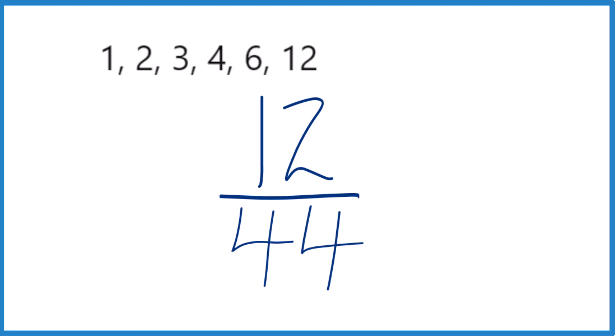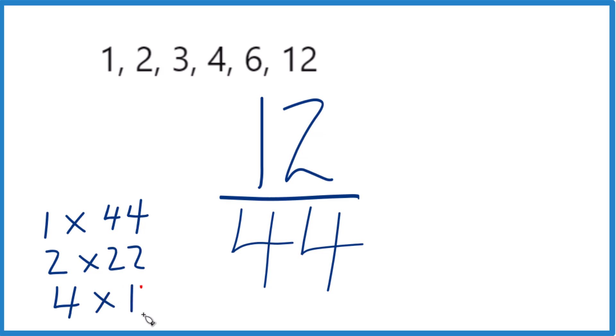For 44, though, we have, let's see, 1 times 44, that would be 44, 2 times 22, that would be 44, and then 4 times 11, that's another factor. So these are the factors for 44.